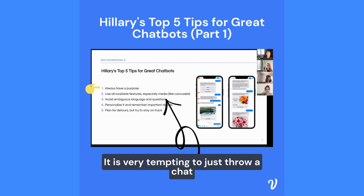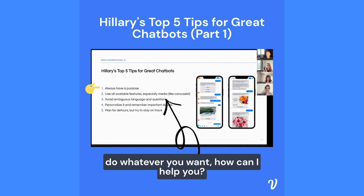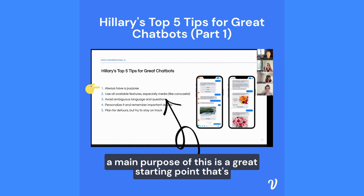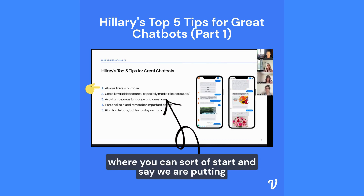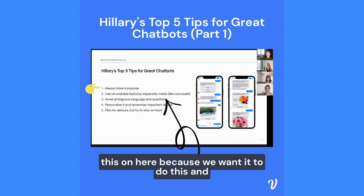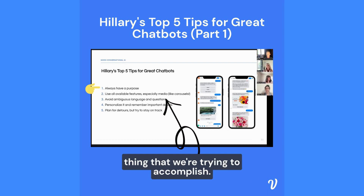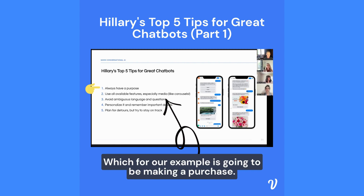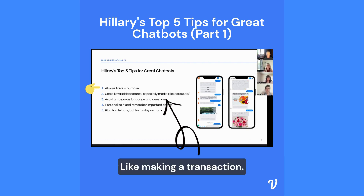It is very tempting to just throw a chatbot onto your website and say this can do whatever you want — how can I help you? But making sure that there really is a main goal and a main purpose is a great starting point. So you start by saying we are putting this on here because we want it to do this. And it can do other things, but the main thing we're trying to accomplish — for our example — is making a purchase, making a transaction.